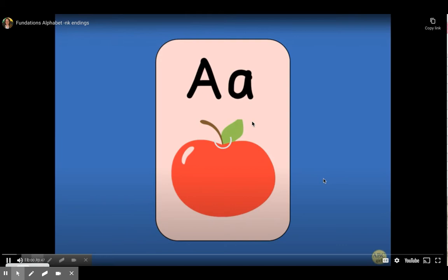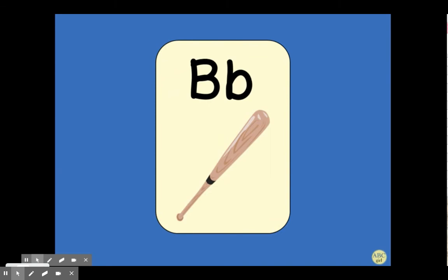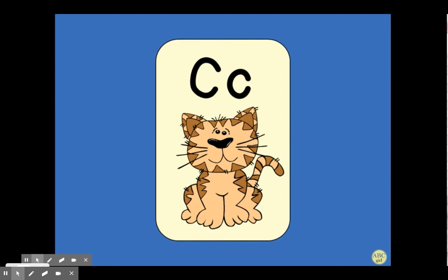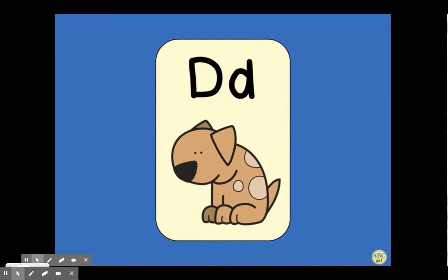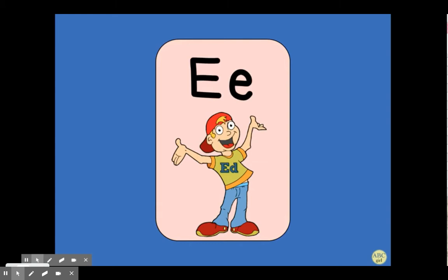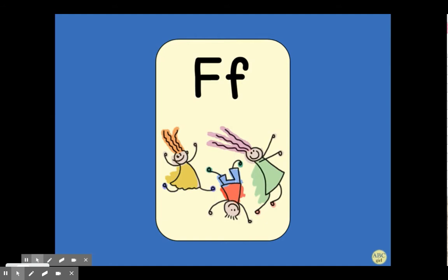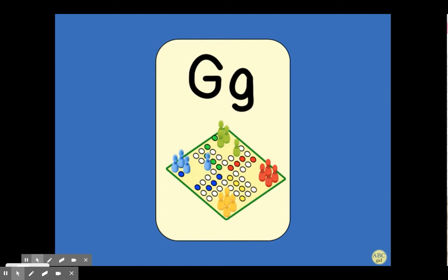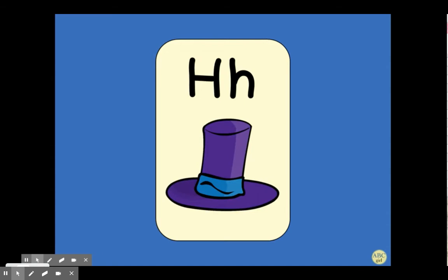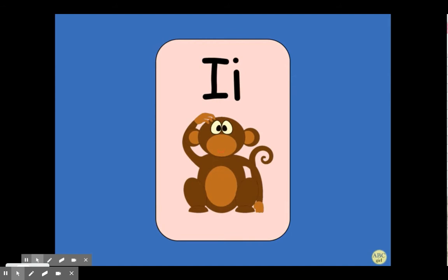A, apple, /a/. B, bat, /b/. C, cat, /c/. D, dog, /d/. E, ed, /e/. F, fun, /f/. G, game, /g/. H, hat, /h/. I, itch, /i/.